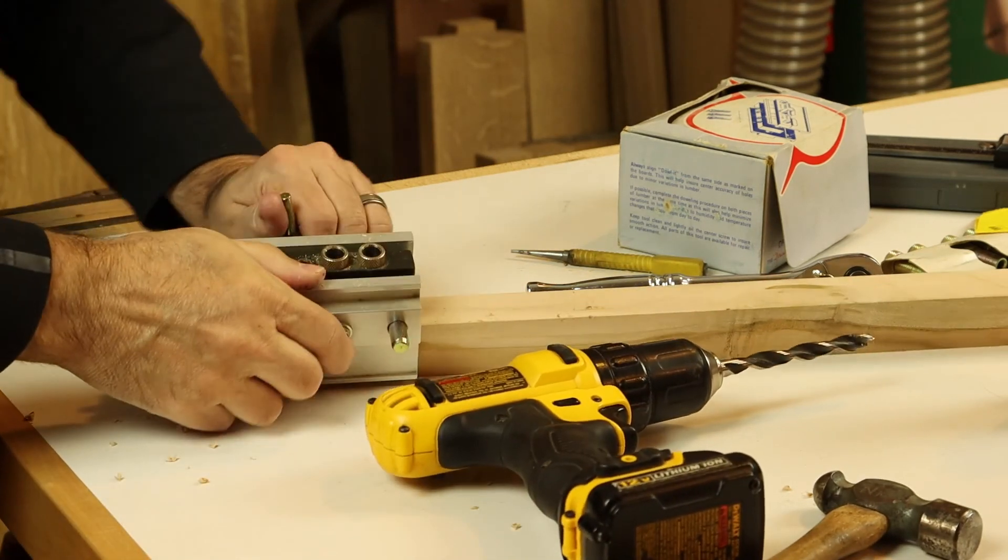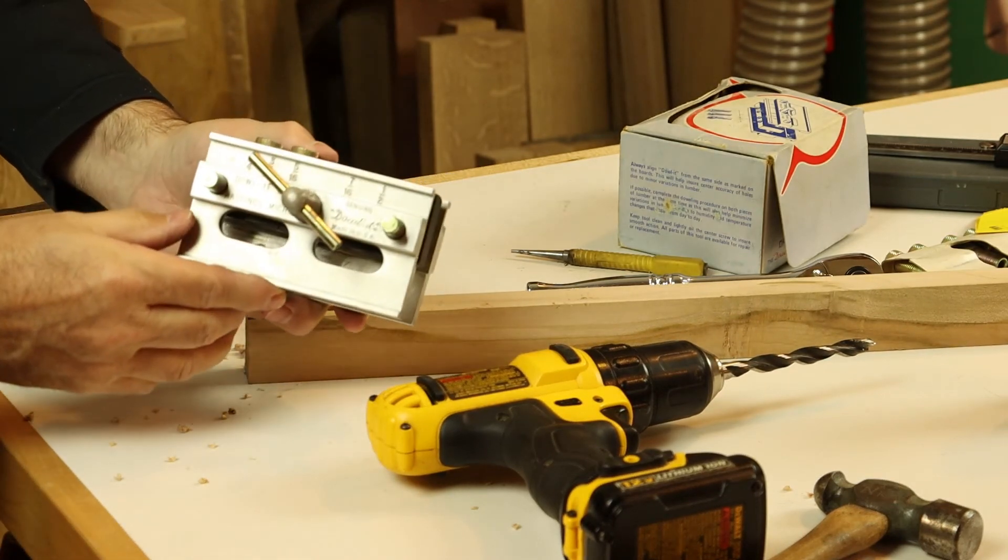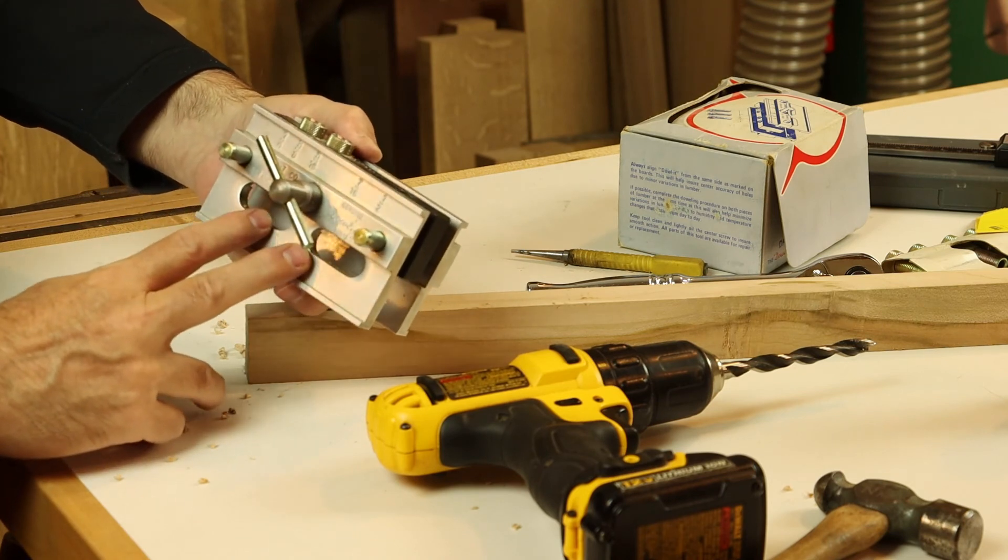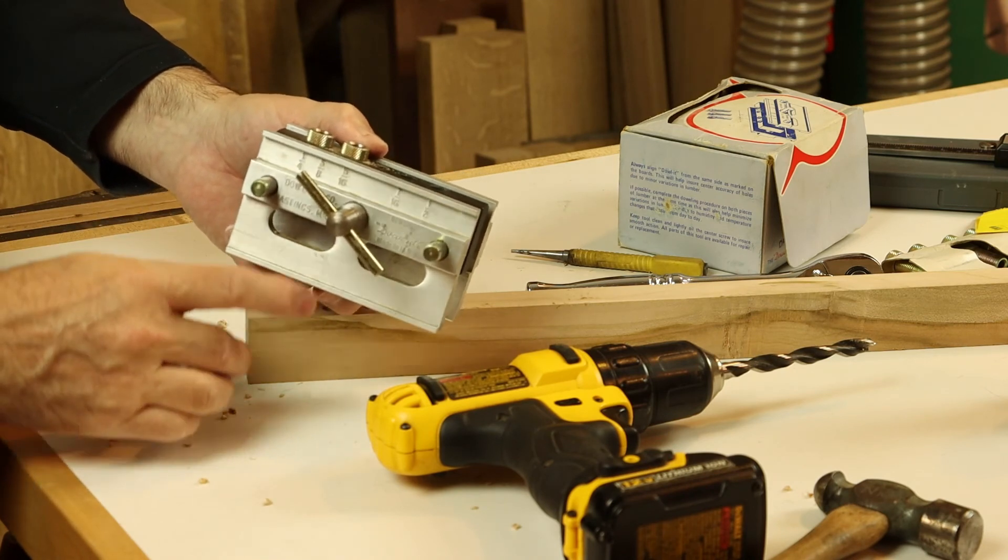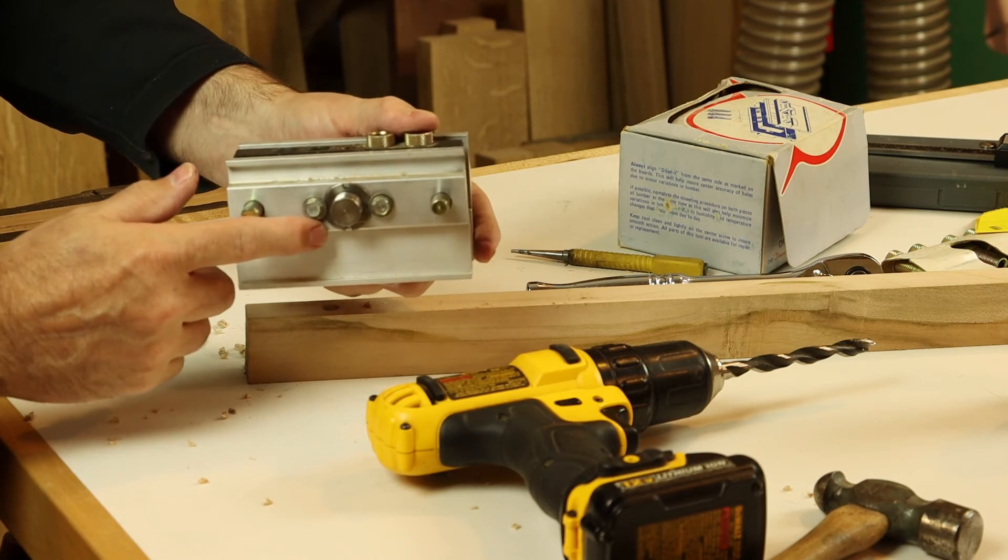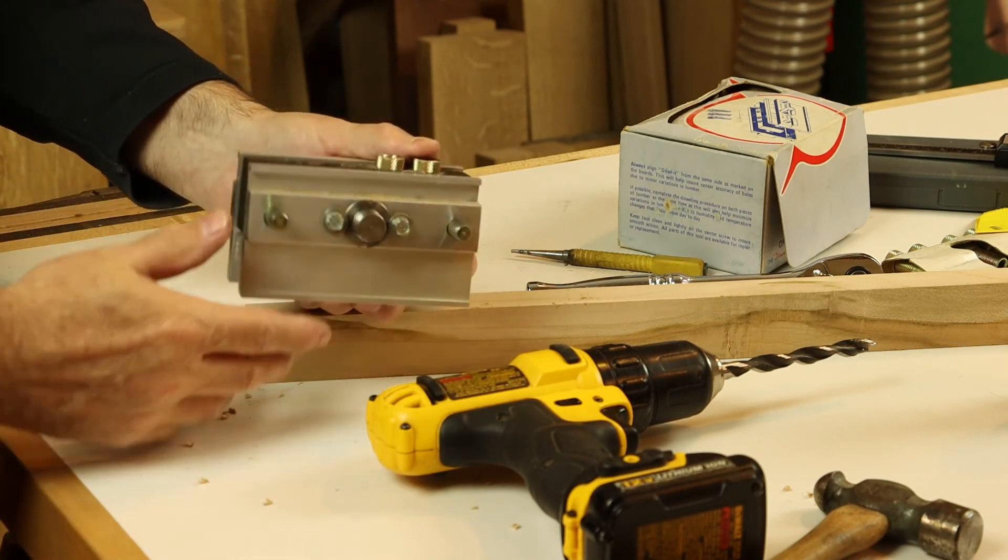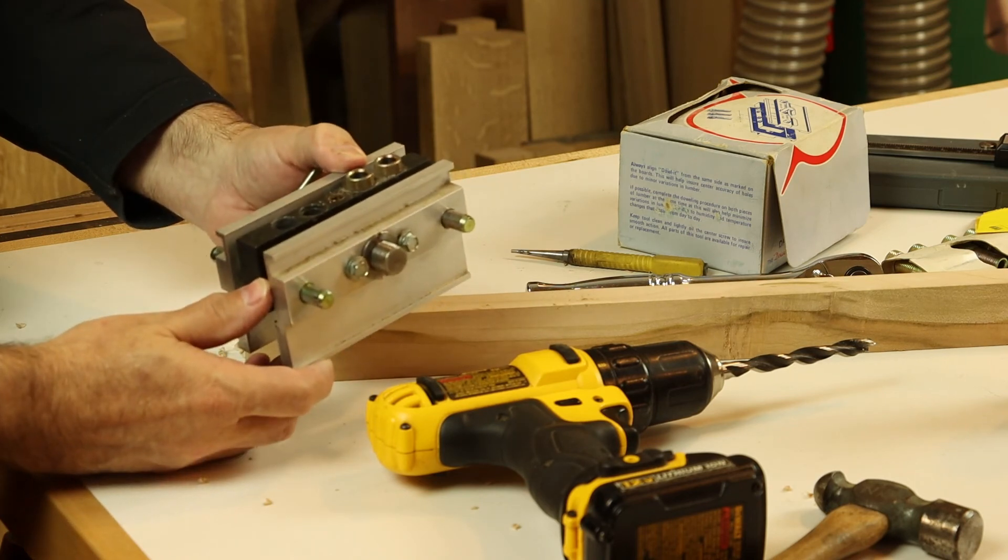Of course, if you take the time when you're laying out the dowels for your project, if you always drill with the same reference of the jig facing the same side of your work pieces, alignment is not so critical. But if you do take the time to dial in this adjustment on your doweling jig, there won't be any surprises. Even if you happen to get a work piece or the jig reversed somewhere in your project, things will still fit together just right.